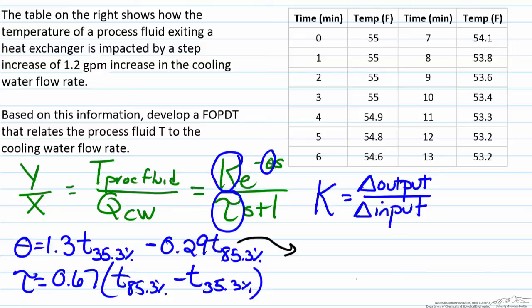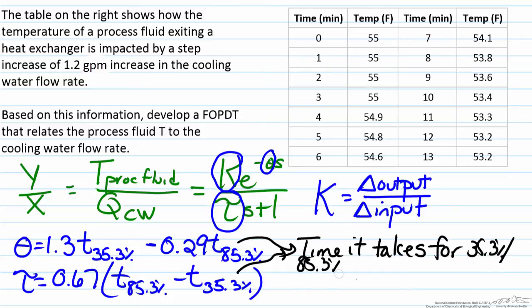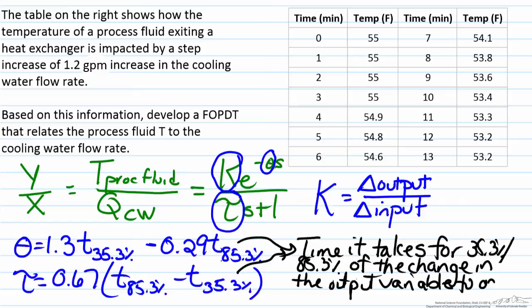Here the 85.3 percent and the 35.3 percent, these times represent the time it takes for either 35.3 percent or 85.3 percent of the change in the output variable to occur. So for example, if a function went from 10 to 20, we'd be interested in the time it took for 35.3 percent of that change to occur, so the difference between 20 and 10 is 10. So we'd be interested in the change of 3.53 of that, or 13.53, and similarly we'd be interested in where 85.3 percent of the change happened, which is 18.53.